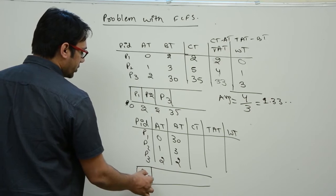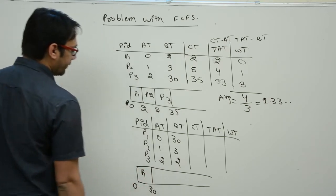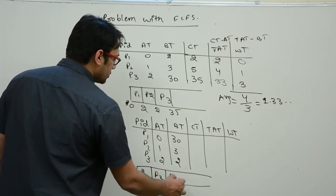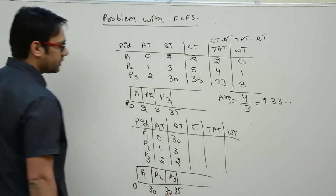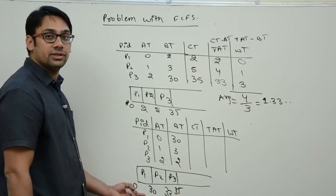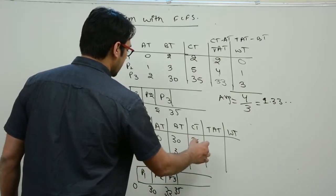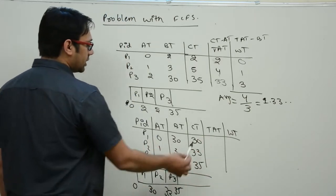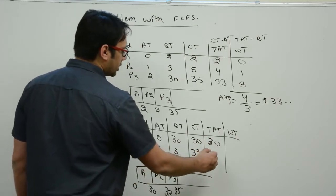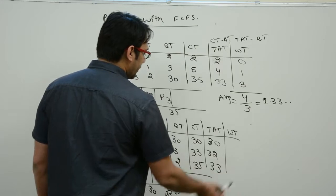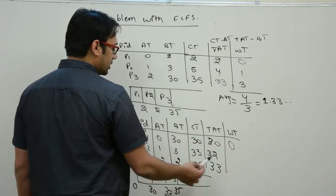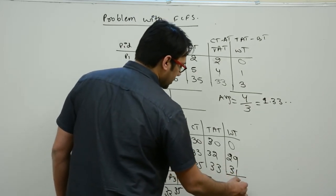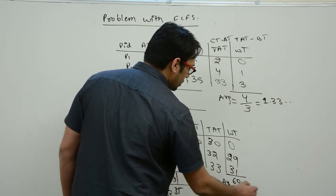At time 0, only P1 is available, so we execute P1 for 30 minutes. Then we execute P2 until 33 minutes, then P3 until 35 units of time. Completion time of P1 is 30, P2 is 33, and P3 is 35. Turnaround times are: 30 minus 0 is 30, 33 minus 1 is 32, and 35 minus 2 is 33. Waiting times are 30, 29, and 1, totaling 60. Average waiting time is 60 divided by 3, which is around 20 units.